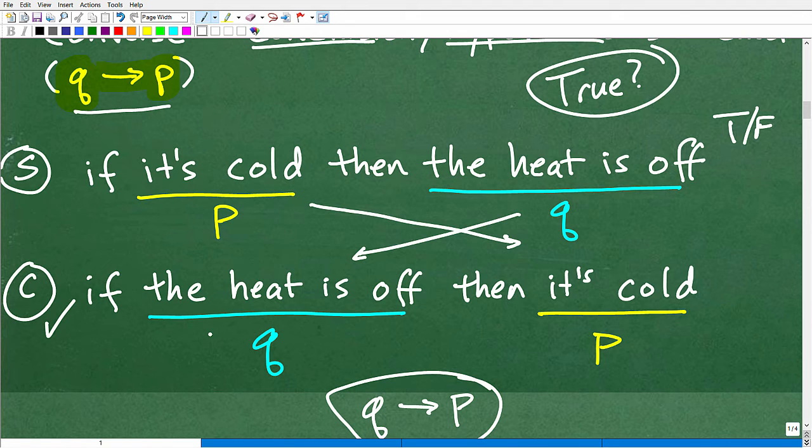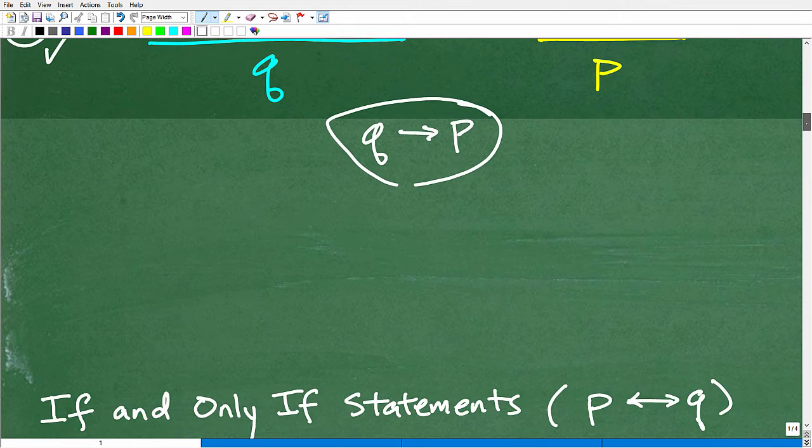And then if we take a look at the converse, let's evaluate how true or false that is. If the heat is off, then it's cold? Well, no, not necessarily, right? So maybe, you know, it's a hot summer day and your heat is off, but guess what? It's not cold either, right? So, we have to look at these statements, whether how, whether they make sense to us, whether they're true or false.